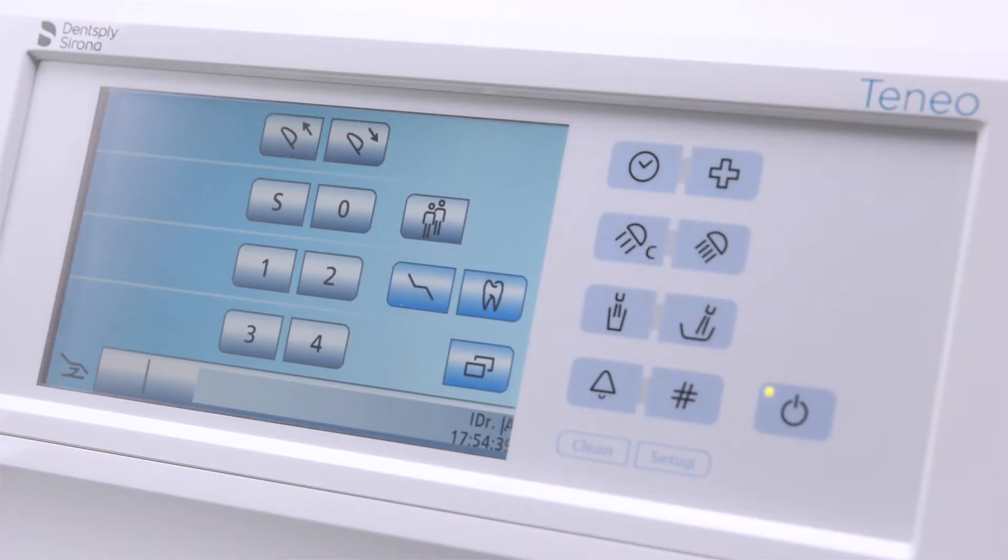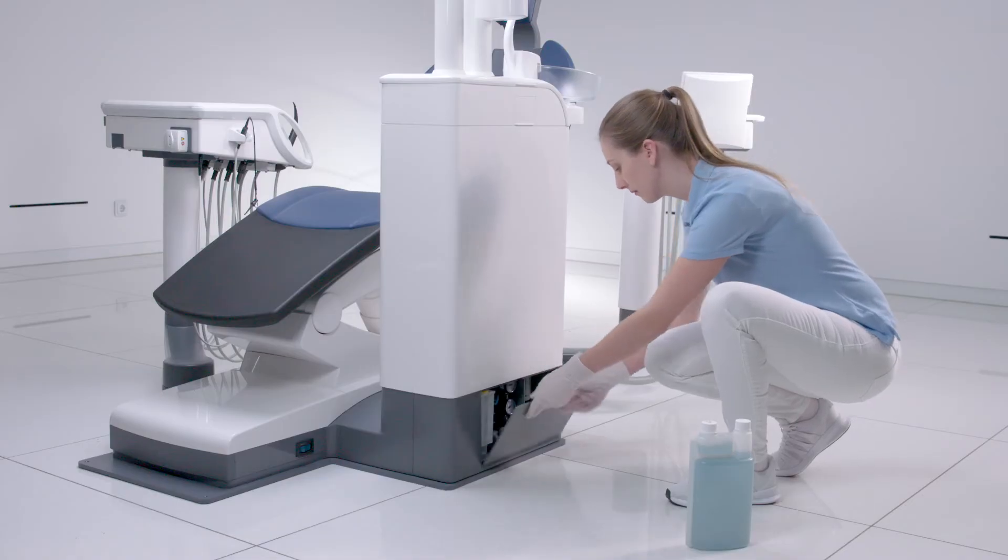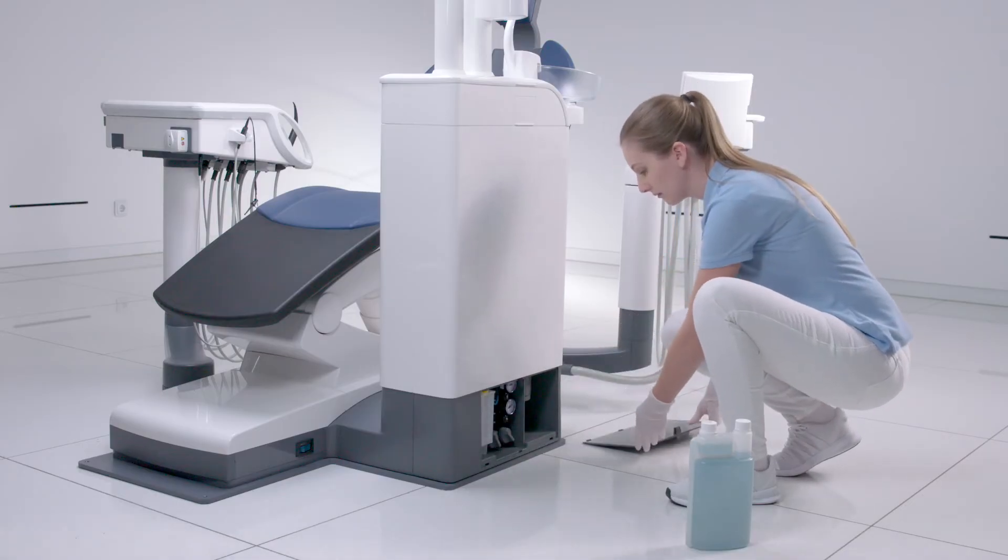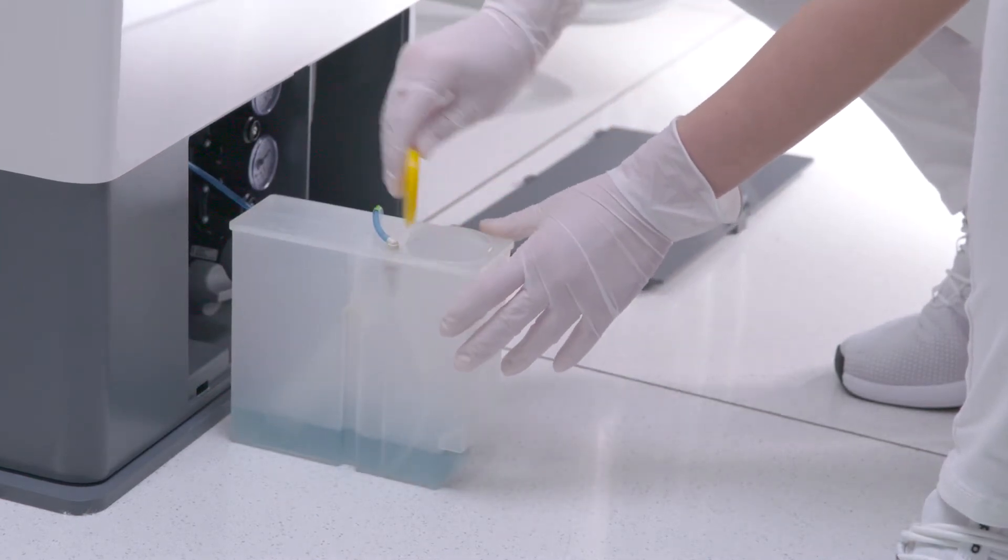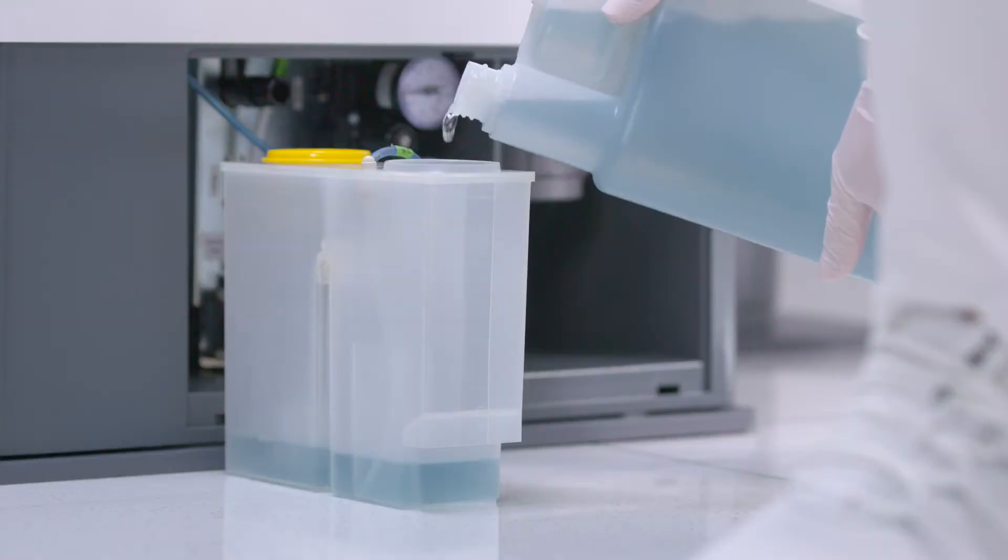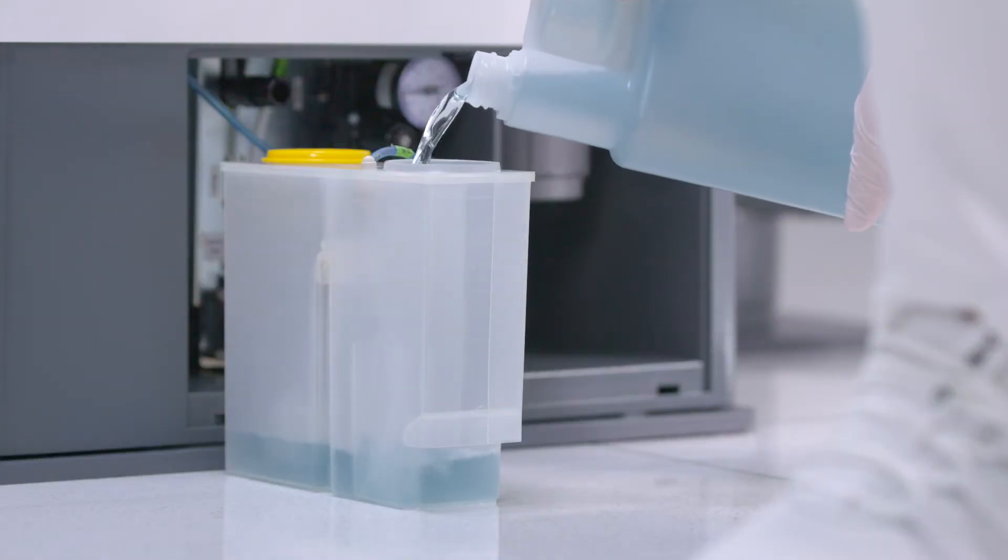If the cleaning agent for cleaning the suction system level is low, CHEM is displayed on the status line of the EasyTouch. Open the flap on the base of the water unit. Pull the tank out of the water unit slightly, paying attention to the hose line. Open the lid on the tank and pour in the cleaning agent.